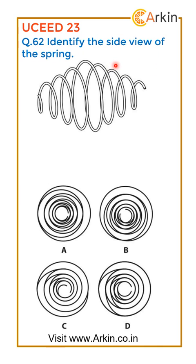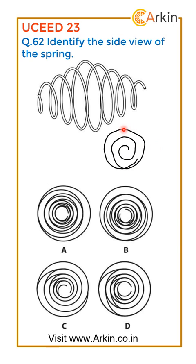We need to identify the side view of the spring. When we try to make the side view, it will go from a smaller circle to a bigger circle and then from bigger back to smaller. So there should be a point where the line comes inside to make a smaller circle — meaning there should be four lines or four curves, something which is present in A and B but not in C and D.